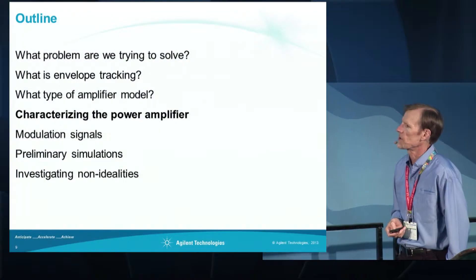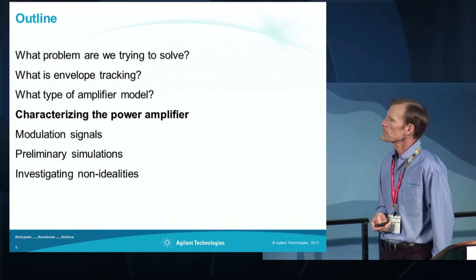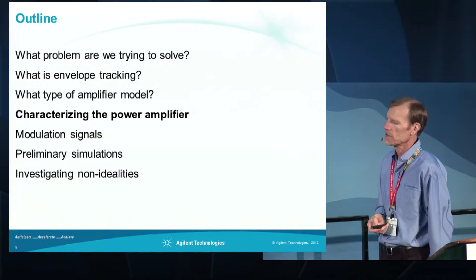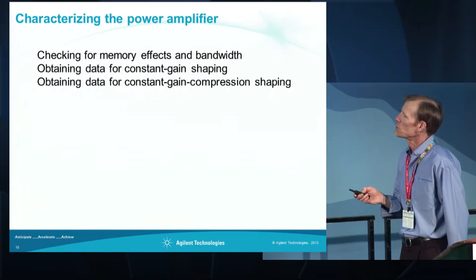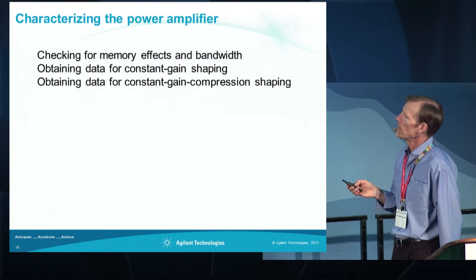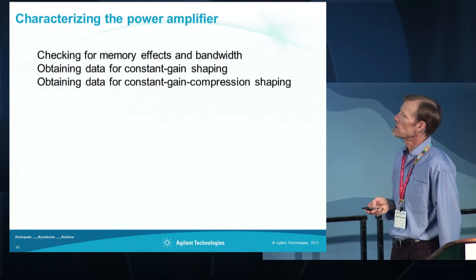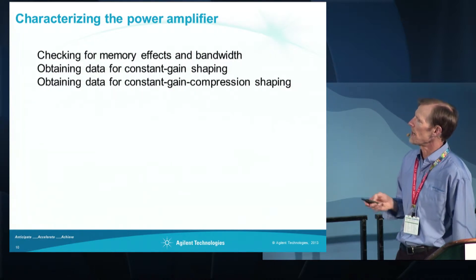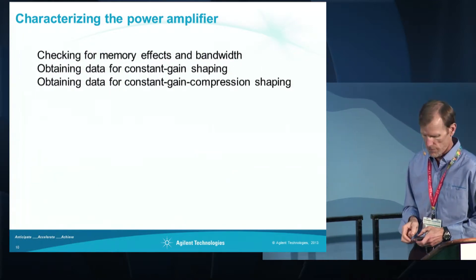It's useful and necessary to do some characterization of the power amplifier prior to running envelope tracking. You can check for memory effects and bandwidth of the amplifier, and I'll show how to attain a constant gain shaping curve and how to attain data for a constant gain compression shaping as well.